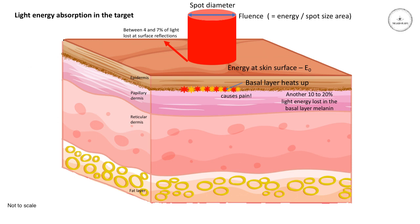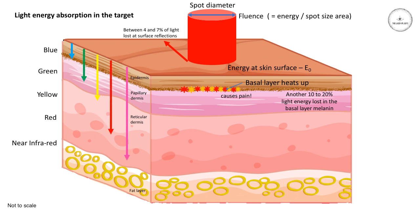The depth to which different wavelengths can penetrate depends very much on the wavelength. Blue light will not penetrate very far — only down to the basal layer at the bottom of the epidermis. Green light can penetrate into the papillary dermis, yellow light a little bit further. Red light will go into the dermis, and near-infrared will penetrate the furthest, almost down into the fatty tissue, depending on how deep that is.